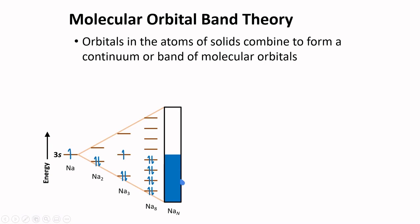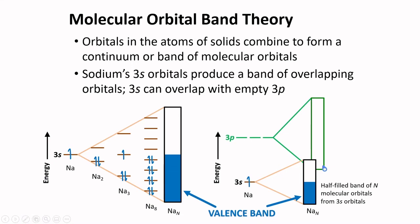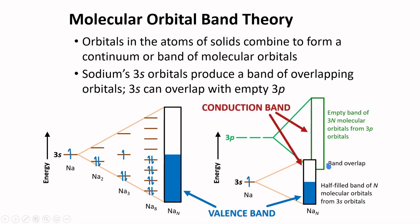This is the band produced by 3s orbitals. This band is called the valence band, and it fills only half of the continuum of molecular orbitals. If we consider the remaining 3s orbitals, we can extend the unfilled band, where there will be an overlap with the 3p orbital. This unfilled part of the band is called the conduction band.